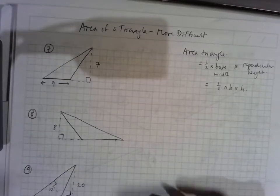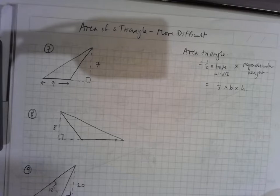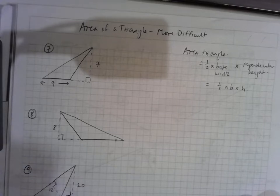So if we have a base width or we have one side and we have a height that's perpendicular to that of the triangle, then we can work out the area.